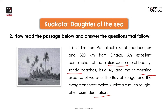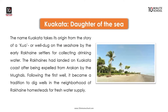The name Kuakata takes its origin from the story of a kua or well dug on the seashore by the early Rakhine settlers for collecting drinking water. The Rakhines had landed on Kuakata coast after being expelled from Arakan by the Mughals. Following the first well, it became a tradition to dig wells in the neighborhood of Rakhine homesteads for fresh water supply.